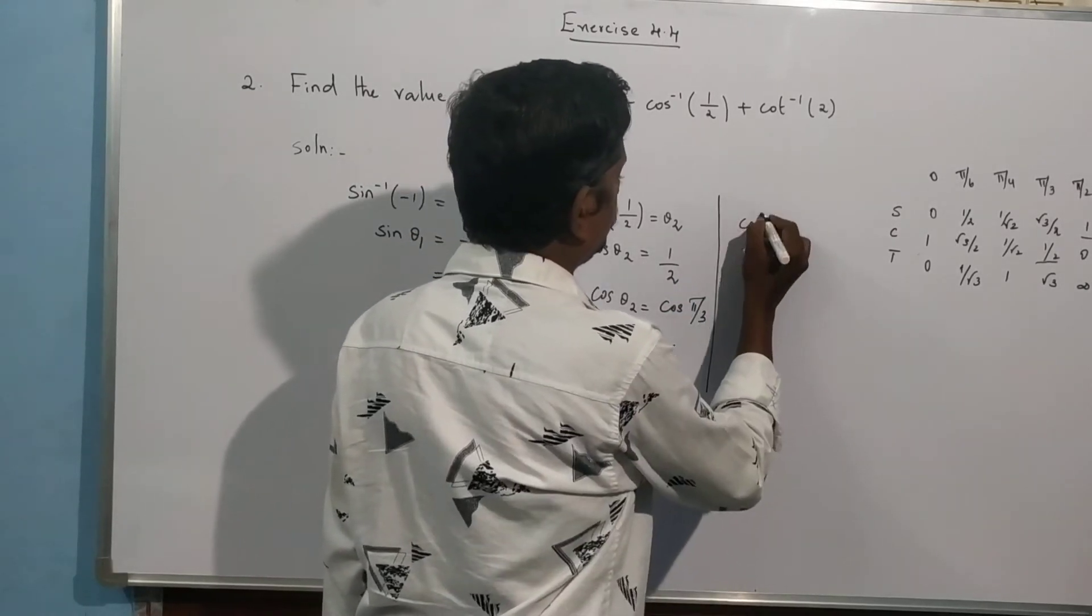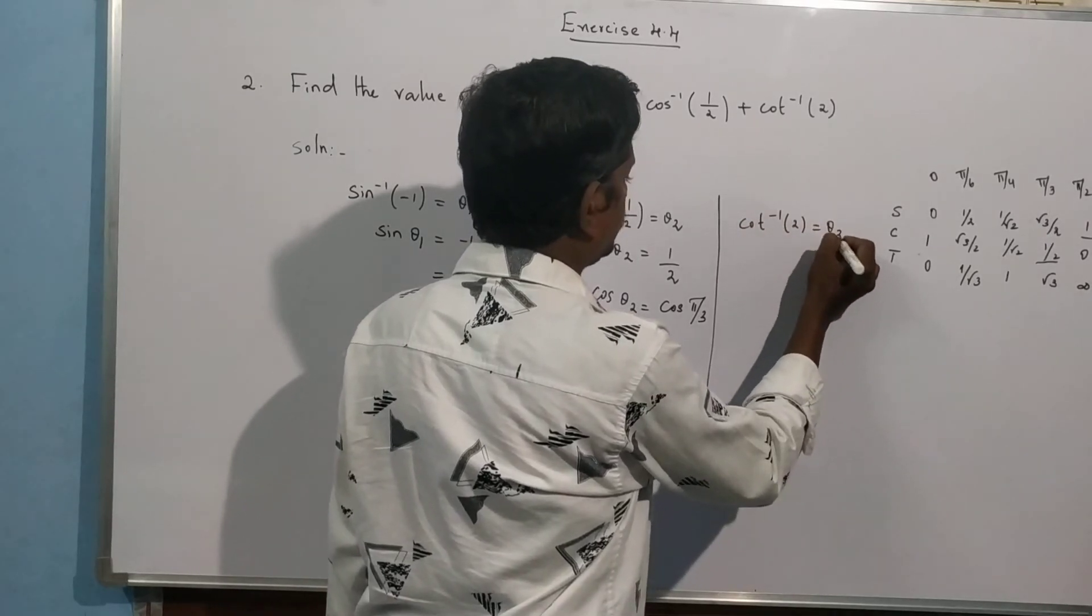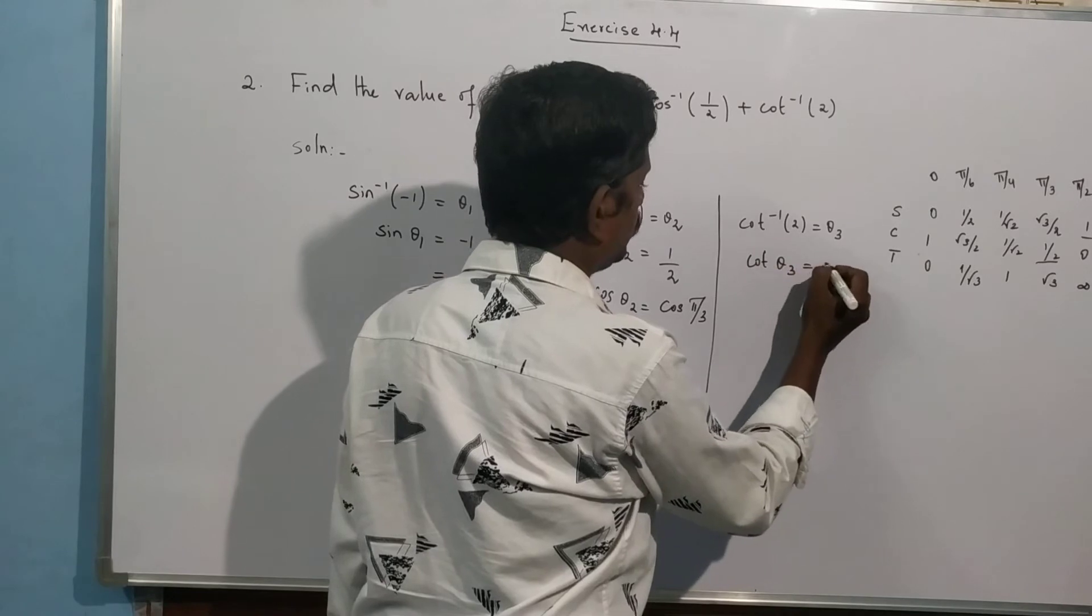Third one, cot inverse of 2 equal to theta 3, then cot theta 3 equal to 2.